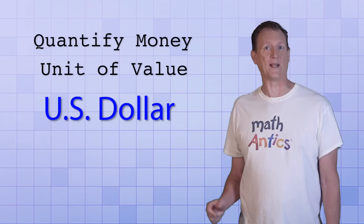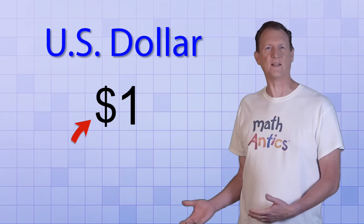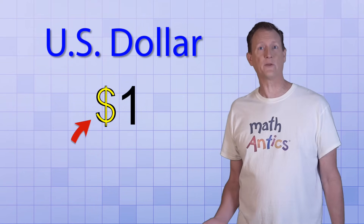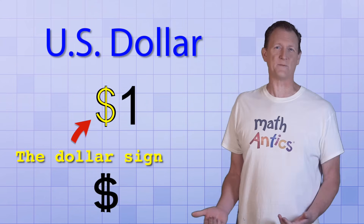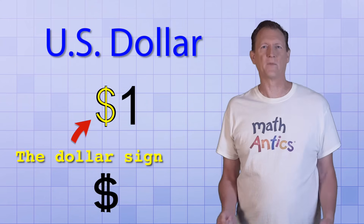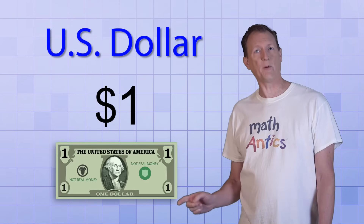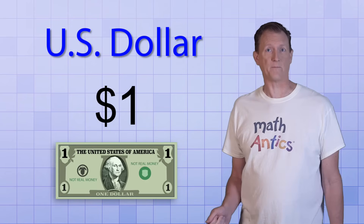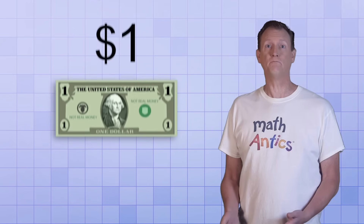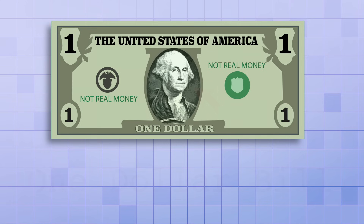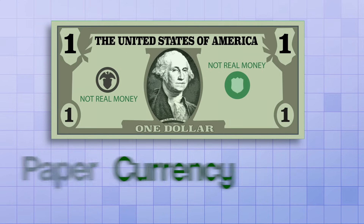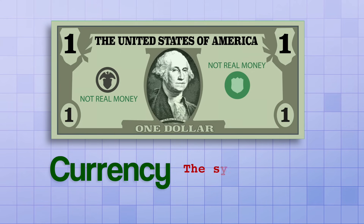The way we quantify money in the United States is with a unit of value called the US dollar. If you have one dollar, you write it like this. This symbol that looks like the letter S with a vertical line through it is called the dollar sign. It's sometimes drawn with two lines, but that can look a little cluttered. The US government prints a paper bill to represent this amount of money — not surprisingly, it's called a one dollar bill. That's a portrait of George Washington there in the center. The one dollar bill is an example of what's called paper currency, and currency is just a fancy word for the system of money used in a particular country.